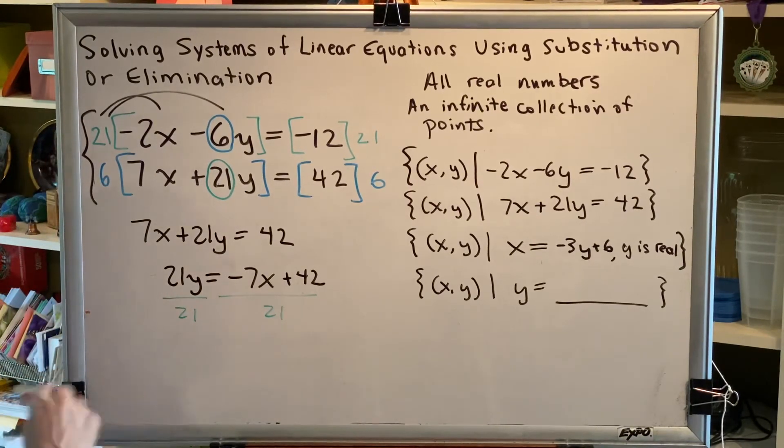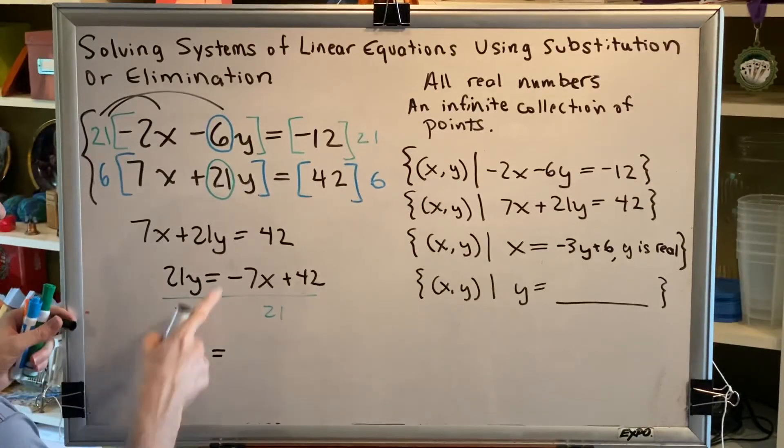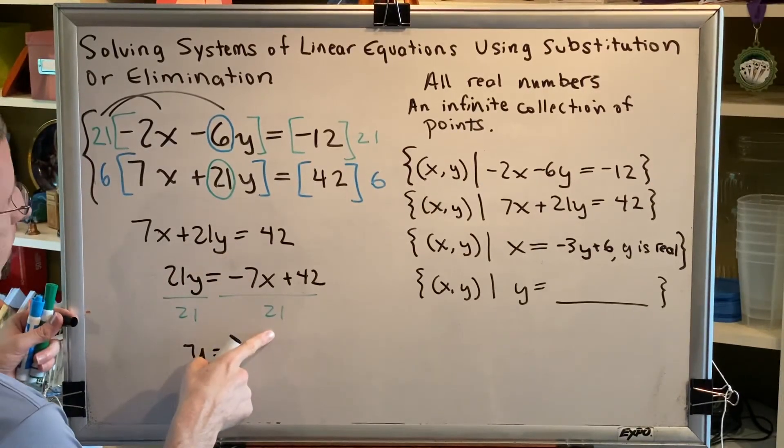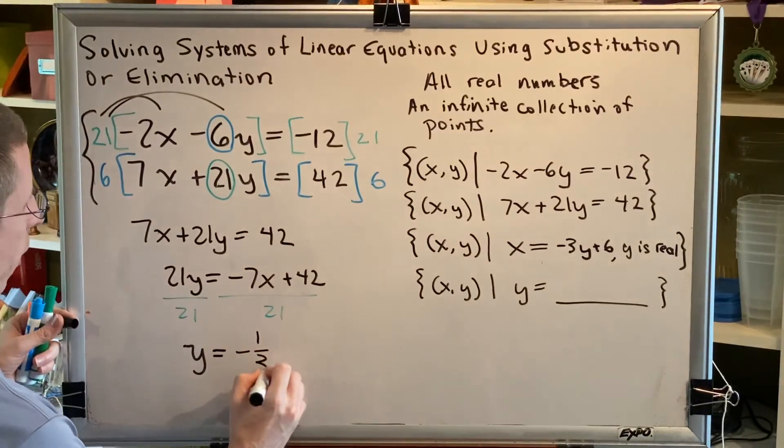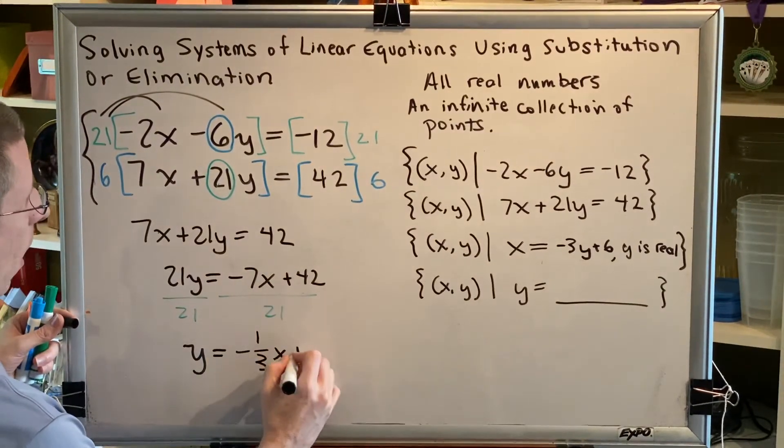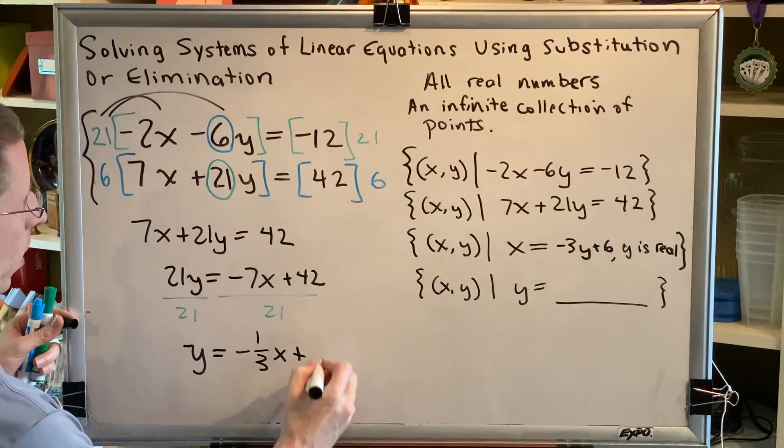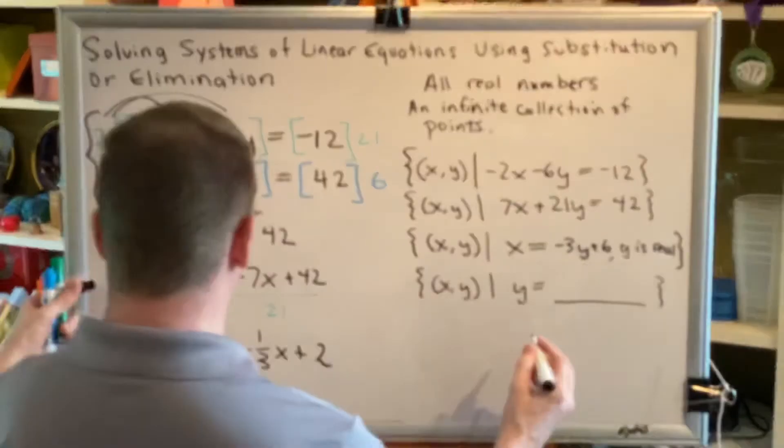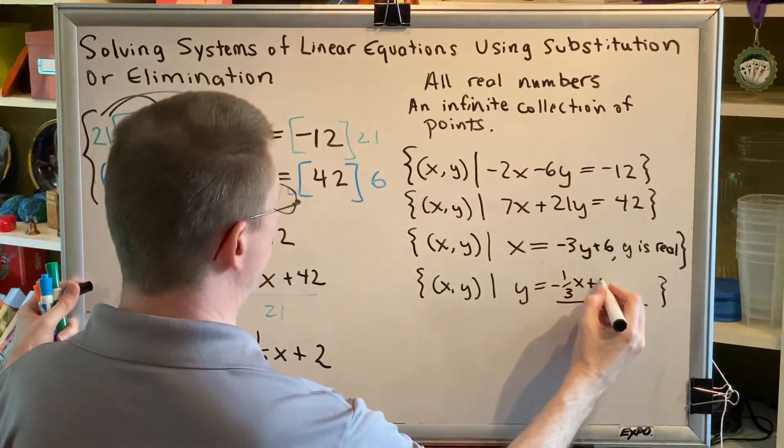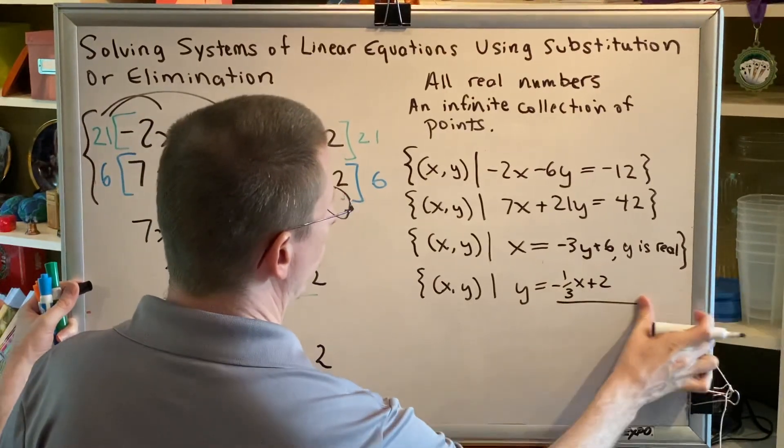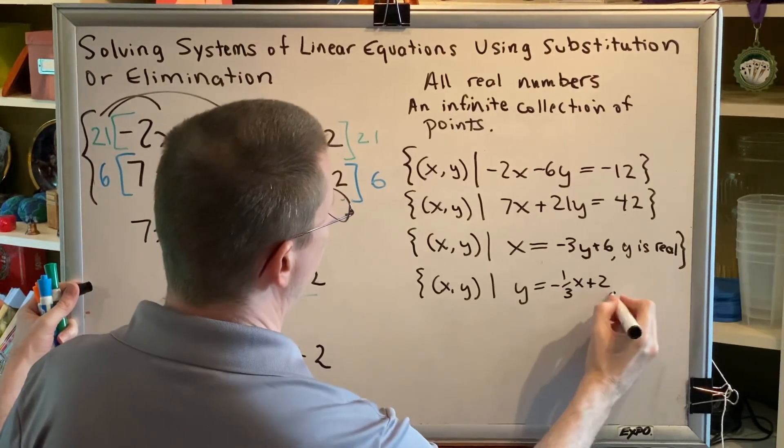Simplify, and we would get y equals 7 divided by 21 is the same as the fraction one-third, and then we still have the negative. So negative one-third x plus, and 42 divided by 21 is 2. So we would get y equals negative one-third x plus 2, where x is any real number.